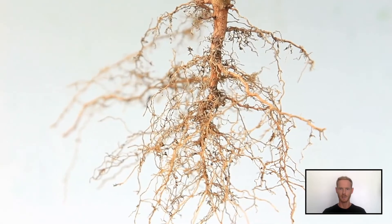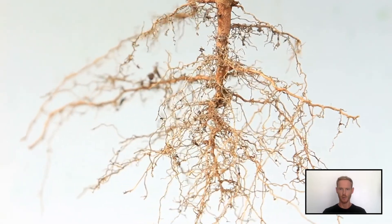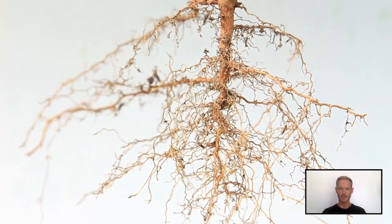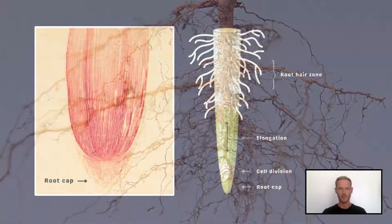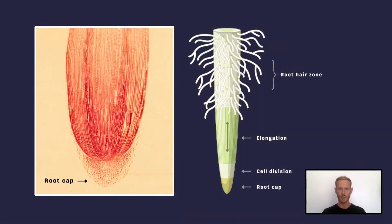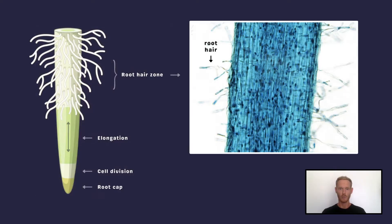Since water enters plants by the roots, we'll begin this lesson by examining their structure and function. The tip of the root is lined with several layers of cells that form the root cap, and above the cap is the region of growth, where cells divide and the root lengthens. Absorption takes place in the root hair zone, where the cells have stopped growing.